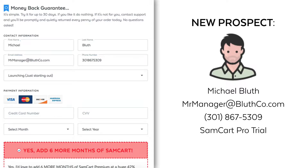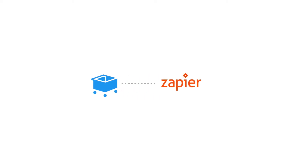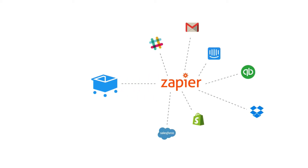And now, every time that happens, you can use SamCart's Zapier integration to run custom actions inside of all kinds of other apps that Zapier connects with. So you can do more with your cart abandons and start following up with your hottest leads.